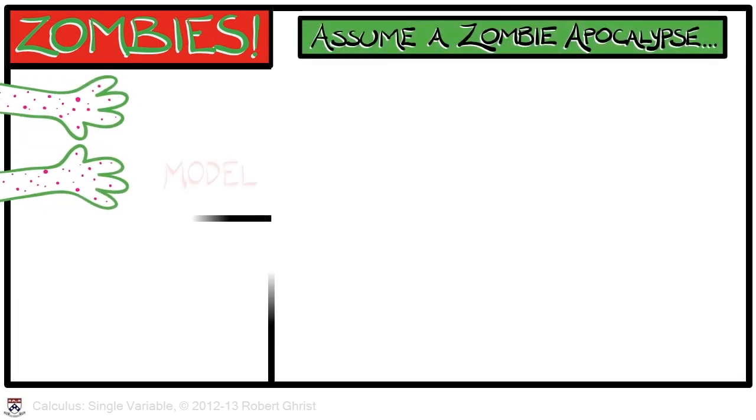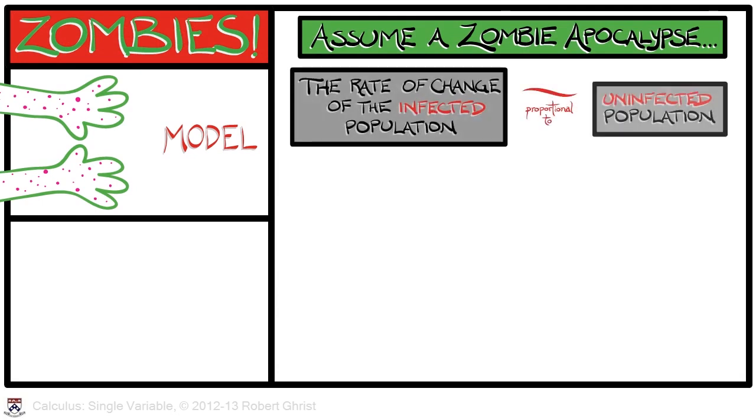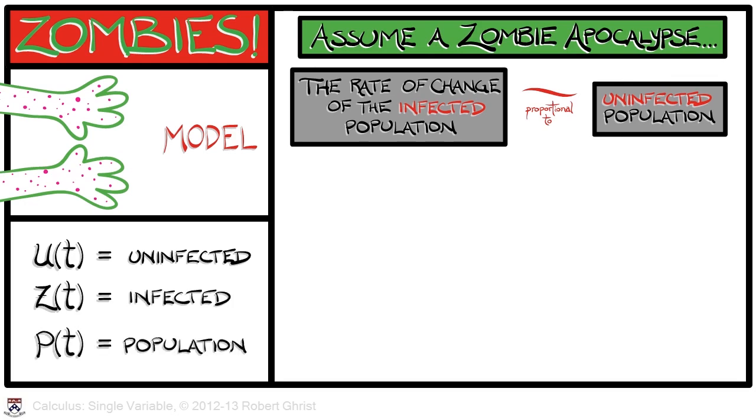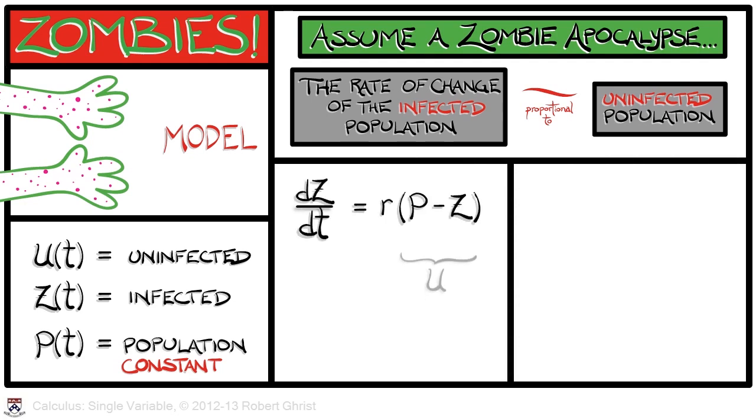And we'll model the zombie apocalypse as follows. The rate of change of the infected population is proportional to the uninfected population. If we denote by u of t, the uninfected population, and z of t, the infected population, then p, the net population size, is a constant. That is, u plus z equals p. Our model says that dz/dt, the rate of change of the infected population, is proportional to u. That is, p minus z. That constant of proportionality we'll call r.